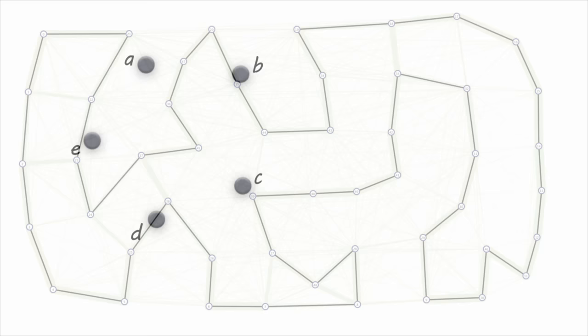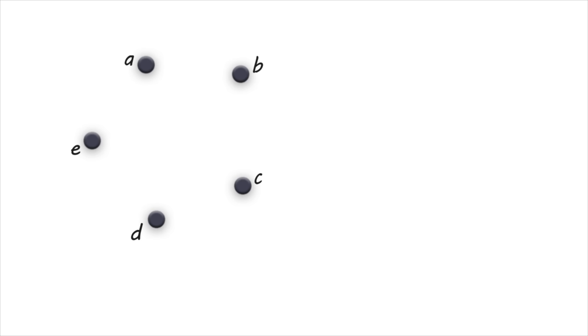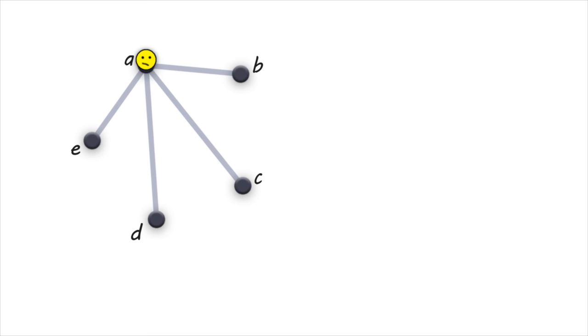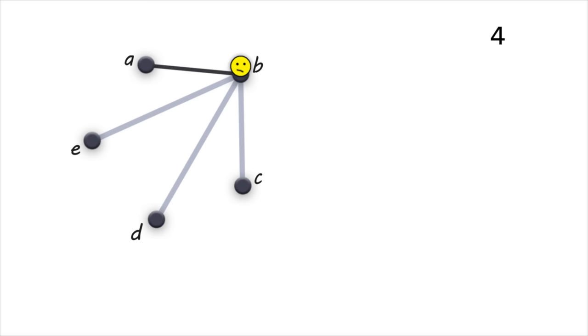There are different task-setting approaches. We will consider the following option: let's say there are five cities and we are in city A. We need to find the shortest route by going through all the cities once and returning to the initial city. In the beginning we have a choice of four cities. Having chosen one, we then need to choose from three remaining cities.